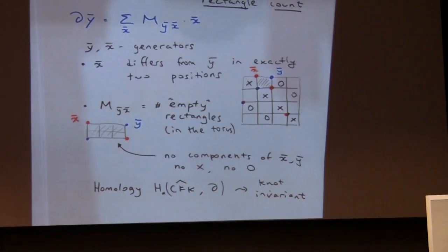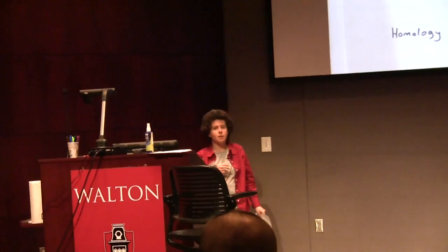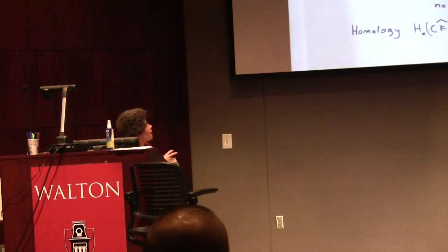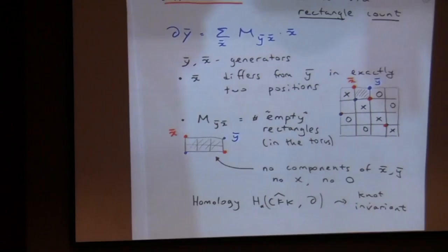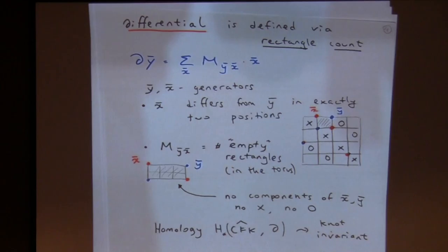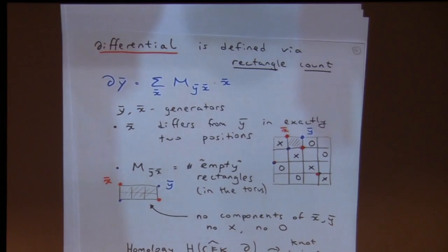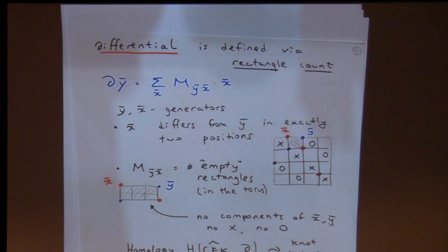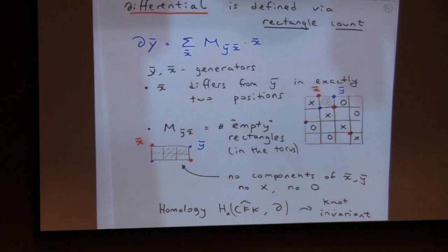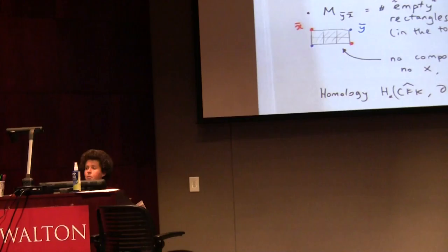To be precise for experts: I'm defining something like HFK-tilde, which depends on the size of the grid diagram, and this is actually the homology of the mirror knot — but these are small technical points. This combinatorial version is due to Manolescu, Ozsváth, and Sarkar; the original definition due to Ozsváth and Szabó used holomorphic disks.